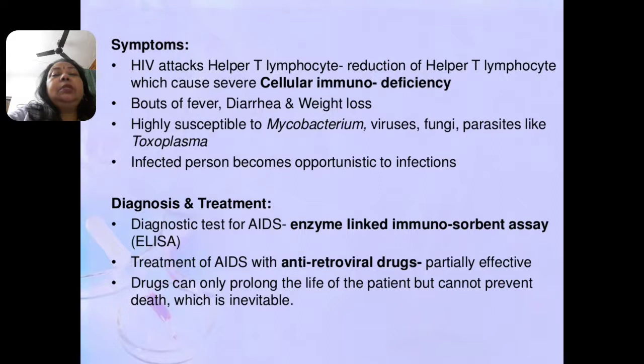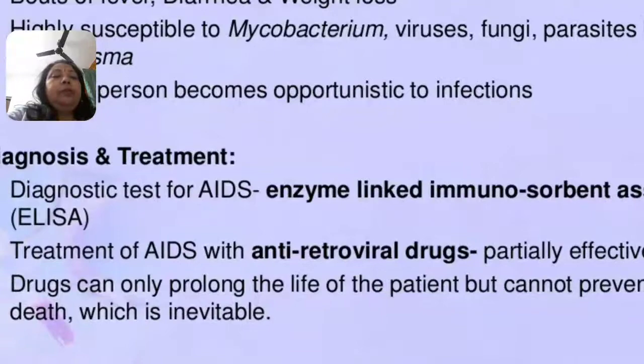For diagnosis, the test used for HIV is the ELISA test — Enzyme-Linked Immunosorbent Assay. For treatment, antiretroviral drugs are partially effective; they can only prolong the life of the patient but cannot prevent death, which is inevitable.